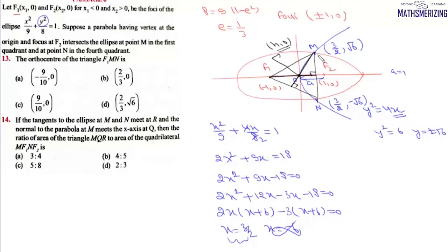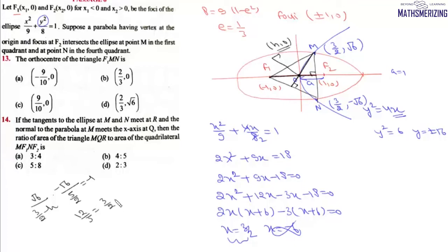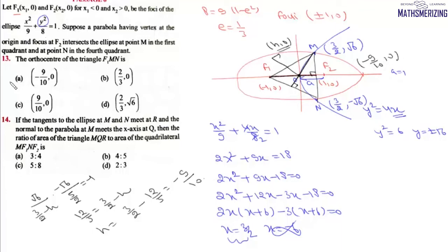Let the orthocenter be H = (h, 0). Using the condition that the product of slopes of an altitude and its opposite side equals -1, we find slope of MH times slope of F1M = -1. Slope of F1M = -√6 / (5/2). This gives 12/5 = 3/2 - h, so h = 3/2 - 12/5 = (15 - 24)/10 = -9/10. The orthocenter is (-9/10, 0), which is option A.